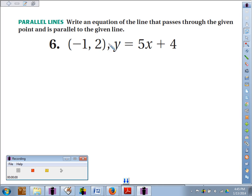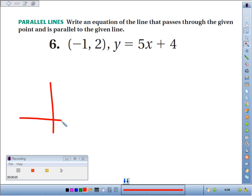Number 6, we're going to write an equation of a line that passes through the point negative 1, 2, and it's parallel to y equals 5x plus 4.